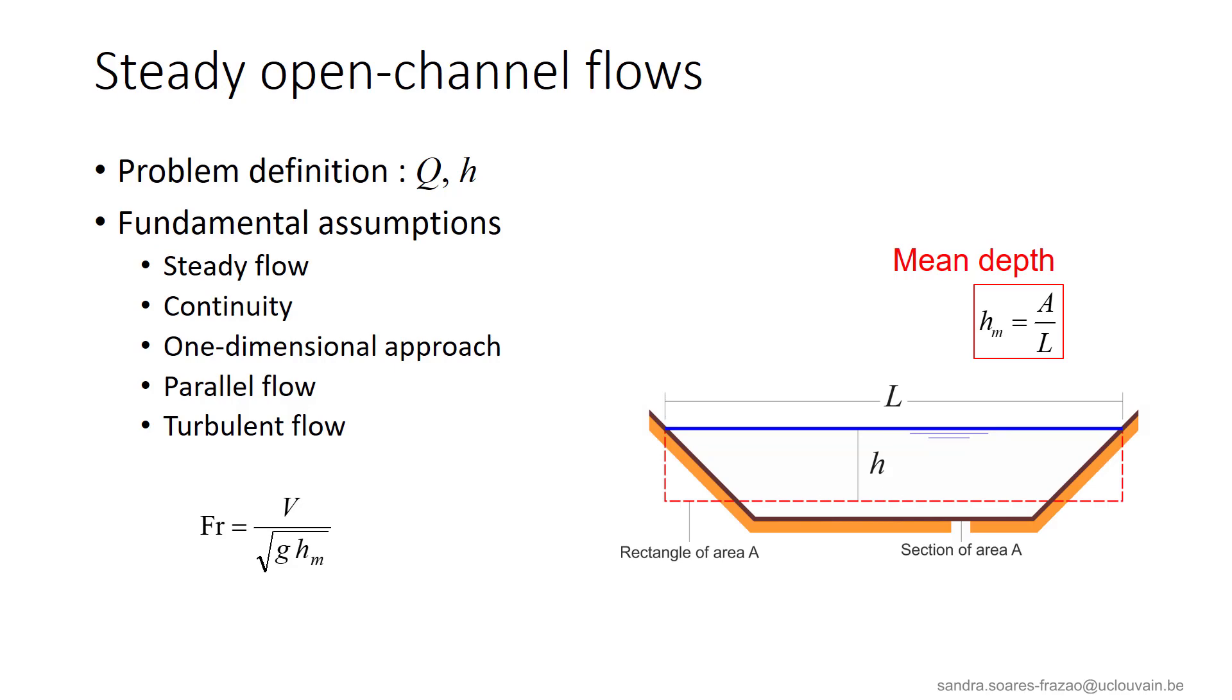Then, as we recalled the Reynolds number, it is useful to introduce also the Froude number, that will be discussed more in details later. It is defined as indicated here, and is representative of the effects of gravity forces on the flow. We will see that these forces have a significant effect in open channel flows, so this number will be useful to characterize the different types of flows.